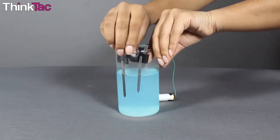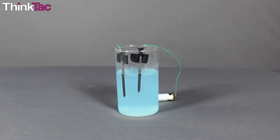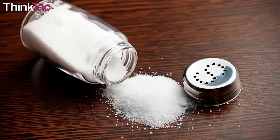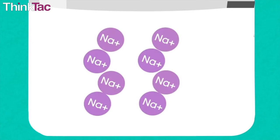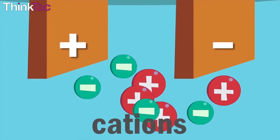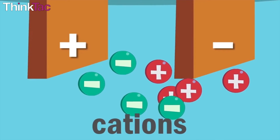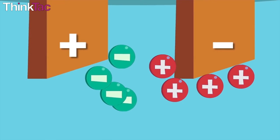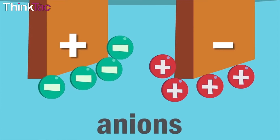As stated earlier, every ionic compound consists of ions. E.g. sodium chloride contains positively charged sodium ions and negatively charged chloride ions. When such ionic compounds are dissolved in water, the ions become free to move. During electrolysis, the positively charged ions move towards the negative electrode, and the negatively charged ions move towards the positive electrode.